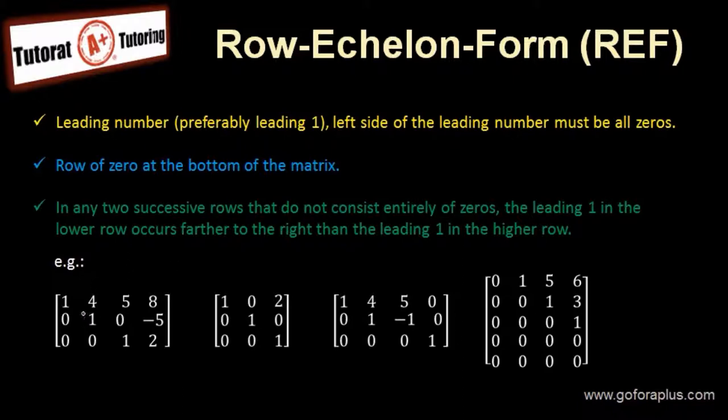So what are the leading numbers? If we look at the example here, the leading number here would be 1, 1, and 1. Now on the left side of this leading number, they must be all zeros. So we see that these are all zero here.